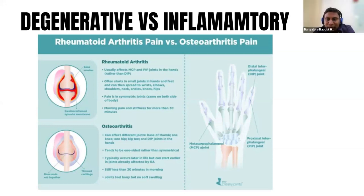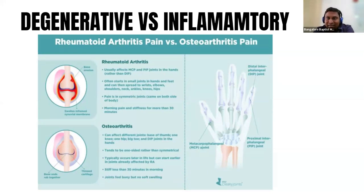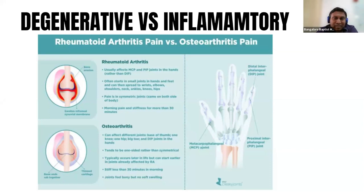Rheumatoid arthritis is an inflammatory joint disease. The joints involved are also different. In osteoarthritis or degenerative type, the main joints affected are the hand joints, the thumb, the knee, and the hip. Whereas in inflammatory type, it's mainly the hand joints, the other joints in the hand, the wrist, the knees, and the ankle. These joints differ between both types.